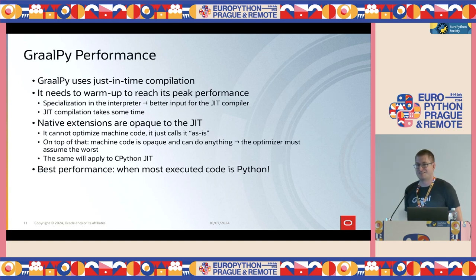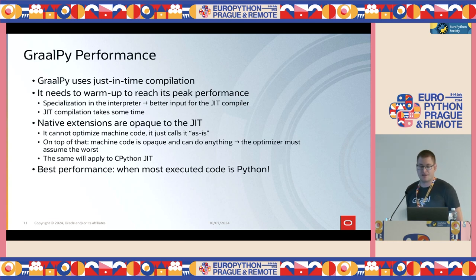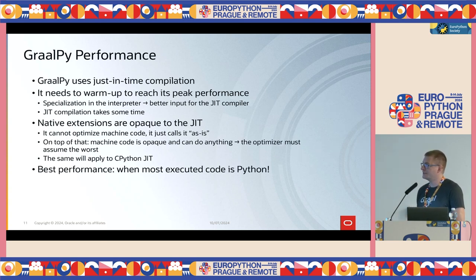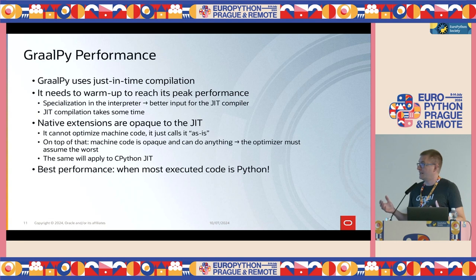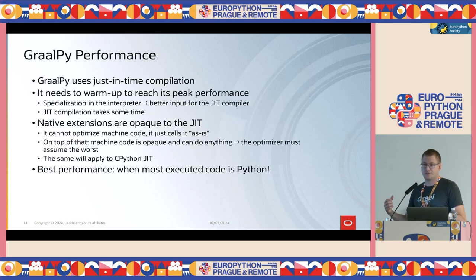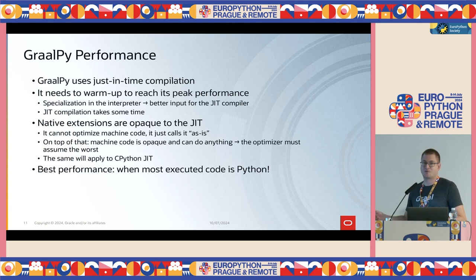Life is not all roses and there's no free lunch. Because GraalPy uses just-in-time compilation, it needs some time to warm up before it reaches its peak performance. There is a specializing interpreter that needs to interpret your code for a while to specialize the bytecodes, and those specialized bytecodes are then the input for the just-in-time compiler, which can then produce better code. This whole thing takes some time, and then the compilation itself also takes time — the more advanced the JIT compiler, the more time it takes.